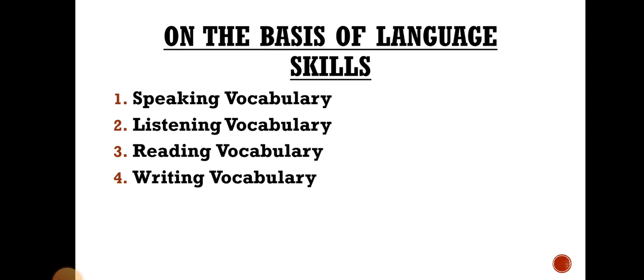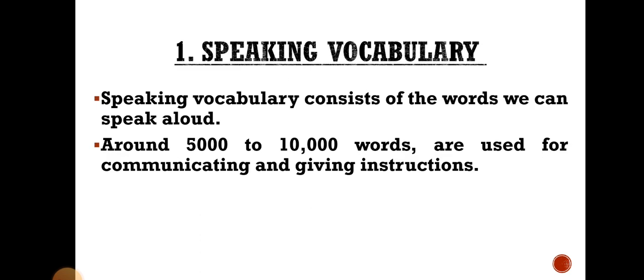On the basis of language skills: speaking vocabulary, listening vocabulary, reading vocabulary, and writing vocabulary. Speaking vocabulary consists of the words we can speak aloud. The words stored in our brain's storehouse — we don't even know all the words we have stored there. They come out, they pop out on their own when we speak loudly, sometimes unconsciously and sometimes consciously.